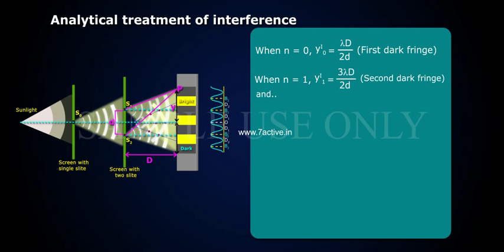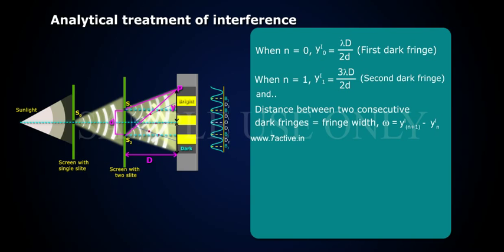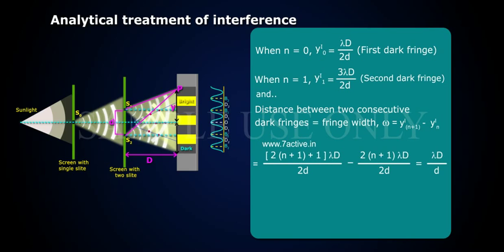When N equals 1, Y1 equals 3 lambda D by 2d — the second dark fringe, and so on. The distance between two consecutive dark fringes equals fringe width omega equals Y'(N+1) minus Y'N, which simplifies to lambda D by d.